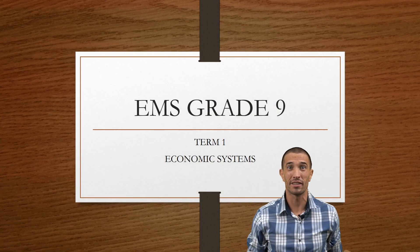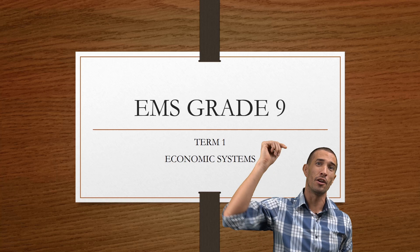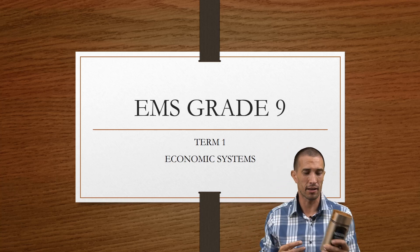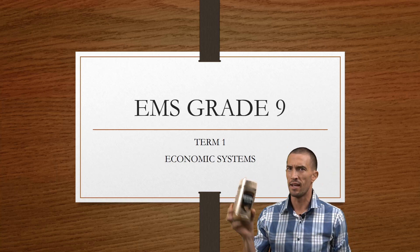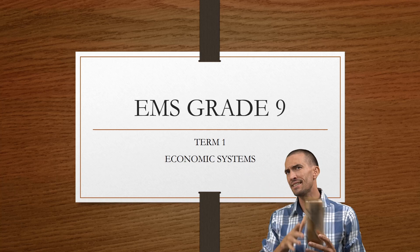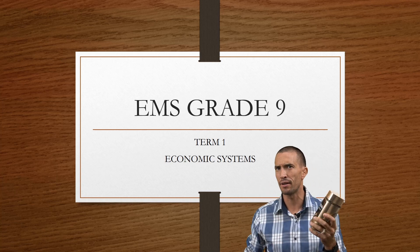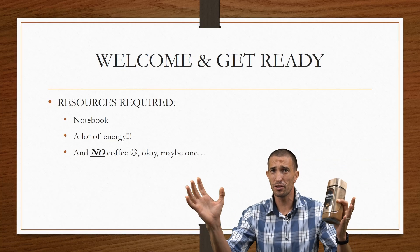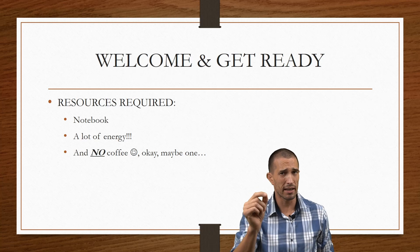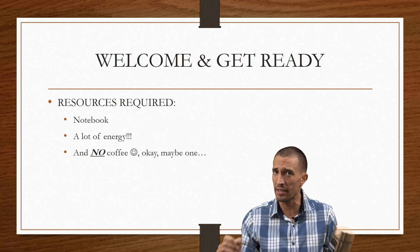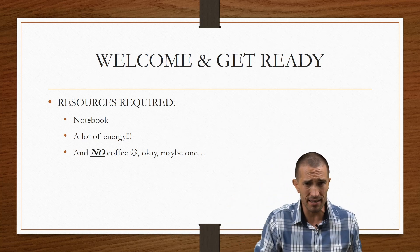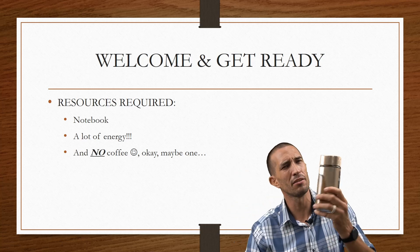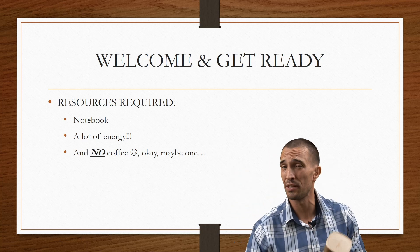Today we're focusing on the economic systems part two — the planned economic system. As you can see, I like my coffee, but there's actually a deeper meaning to it. In economics, you need to plan, have your resources ready, make notes, and you can have some coffee — but don't overdo it. Water is better.